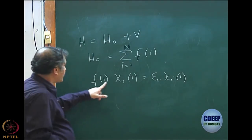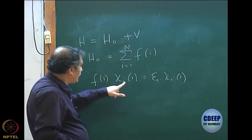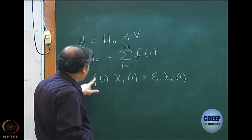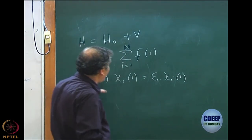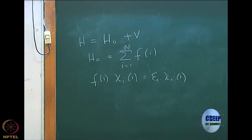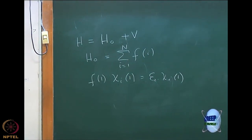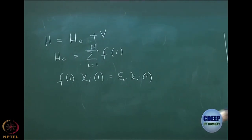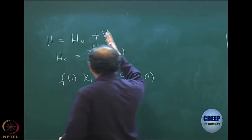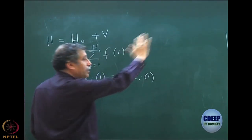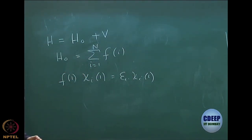The Hamiltonian must be a function of electron coordinates, so this is a sum of the Fock operator. If I have f(1), similarly I have f(2) and so on. As far as the eigenvalue equation is concerned, any one of them is good. I have the eigenvalue equation f(1)χᵢ(1) = εᵢχᵢ(1), and I am explicitly working with the canonical Hartree-Fock just for simplification. So here these are coordinates; χᵢ is a spin orbital.